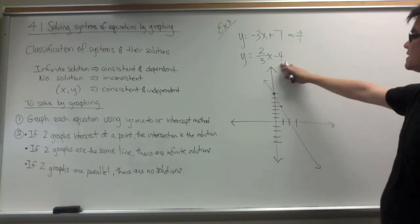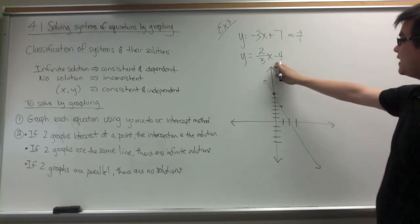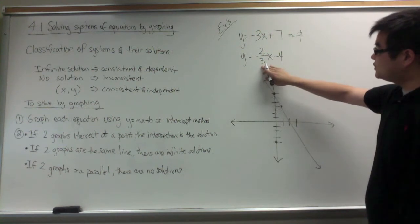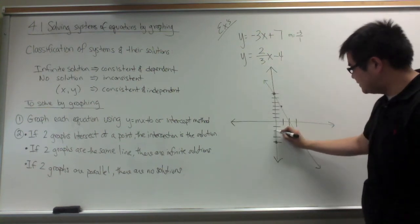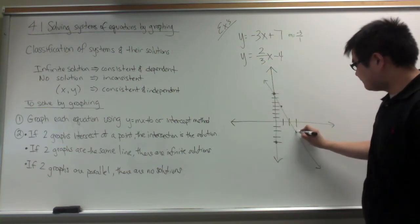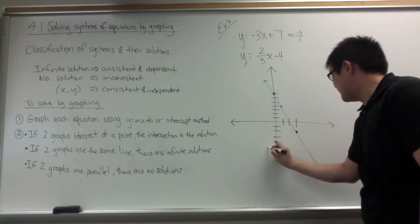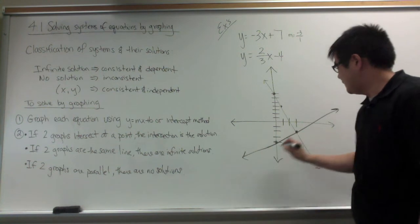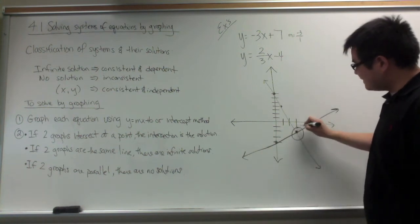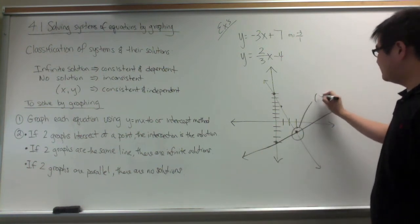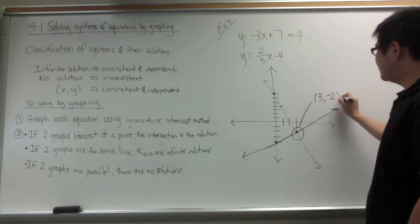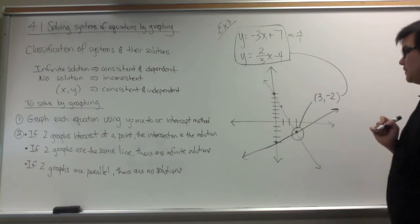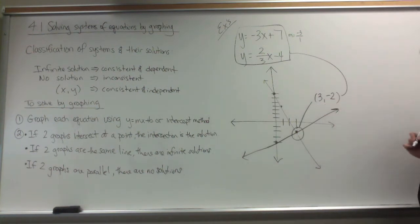Then, we are going to graph the second equation. The y-intercept is negative 4, so we go down 4 spots. Then, the slope is 2 over 3, so I am going to go up 2 and over 3. Since the two graphs intersect at that point, (3, -2) is the solution to the system of equations.